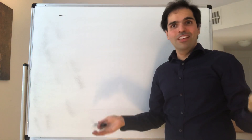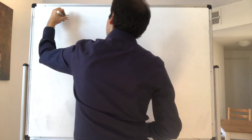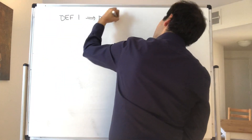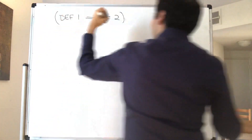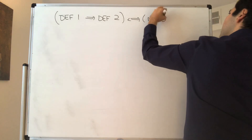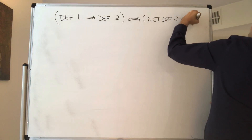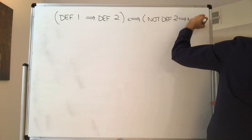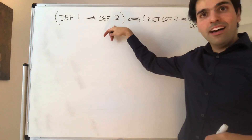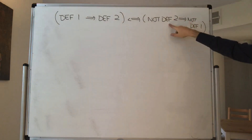Now let's show the other direction: definition one implies definition two. Mathematically, this is the same as showing that not definition two implies not definition one — i.e., the contrapositive. For example, if it rains then you have an umbrella means that if you don't have an umbrella, then definitely it doesn't rain.